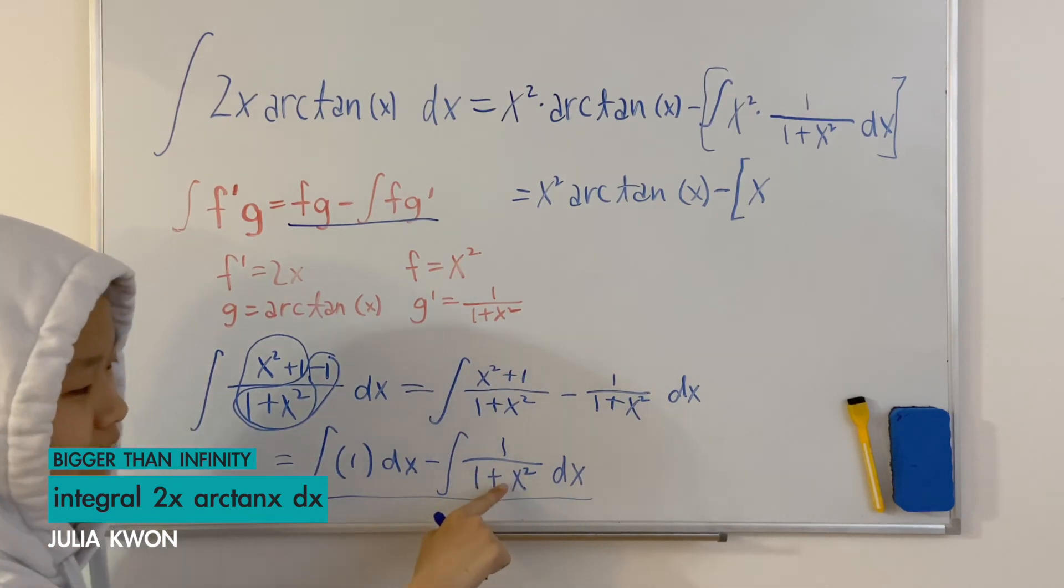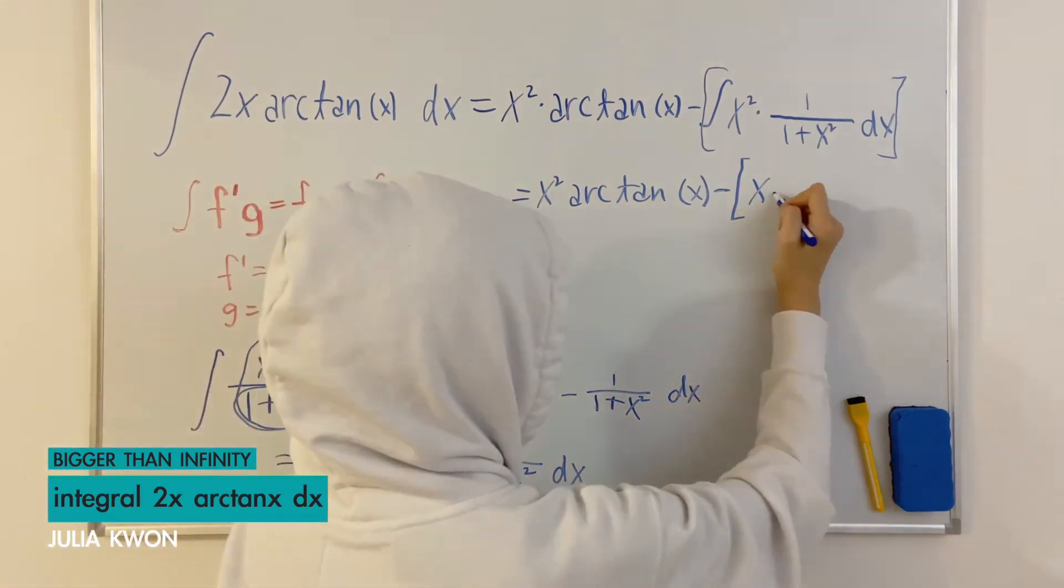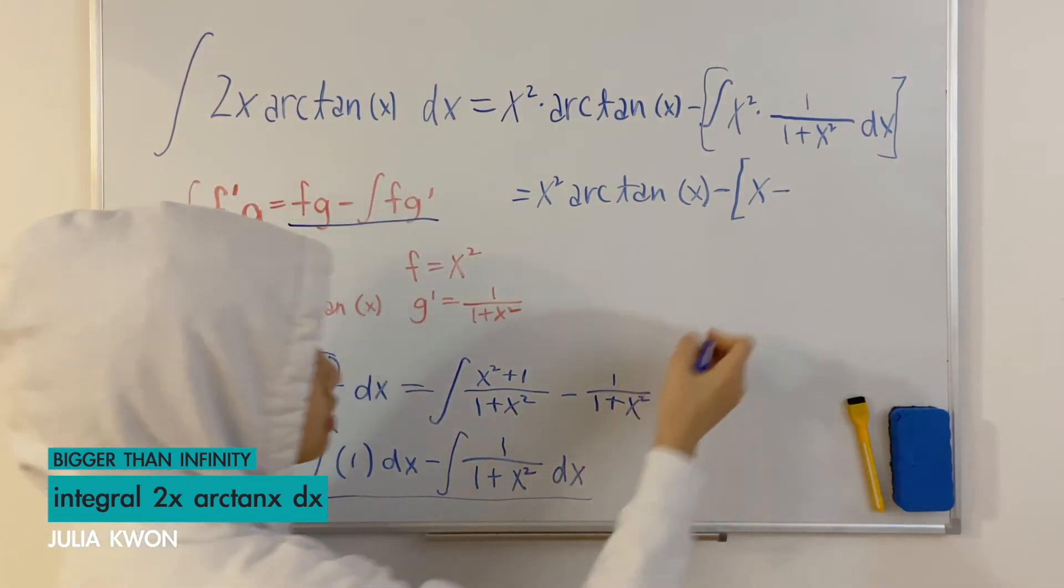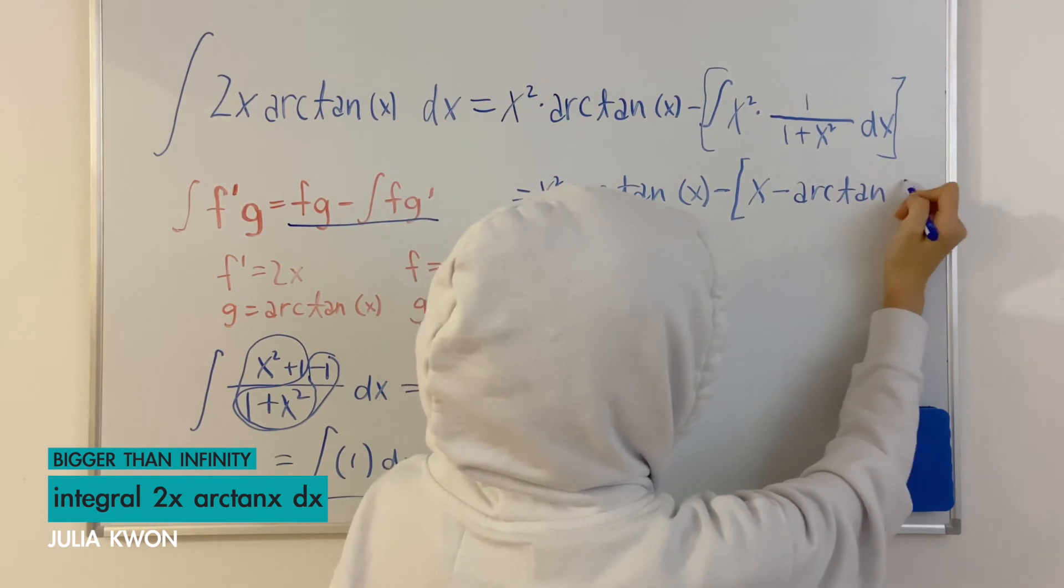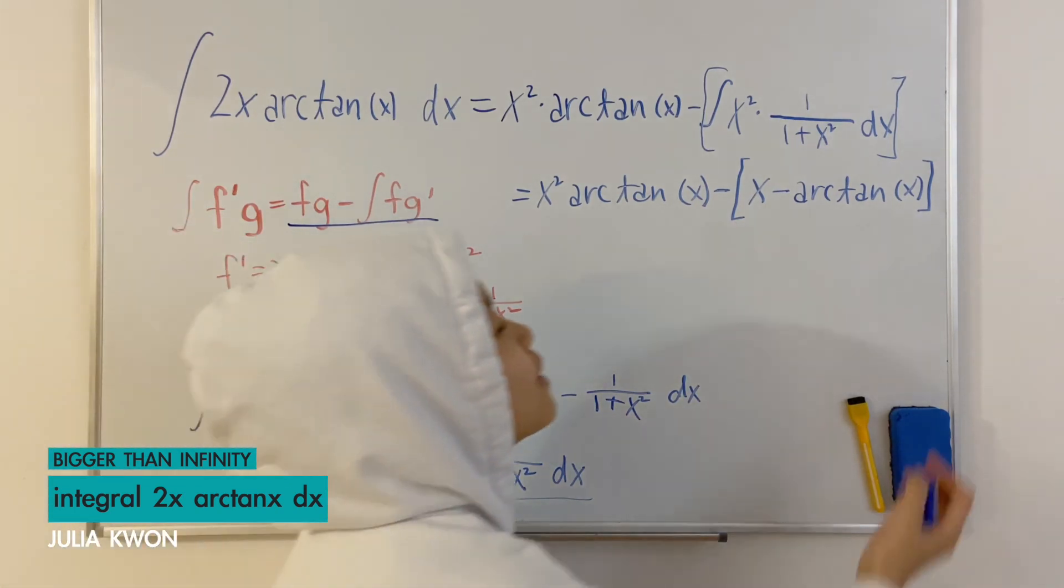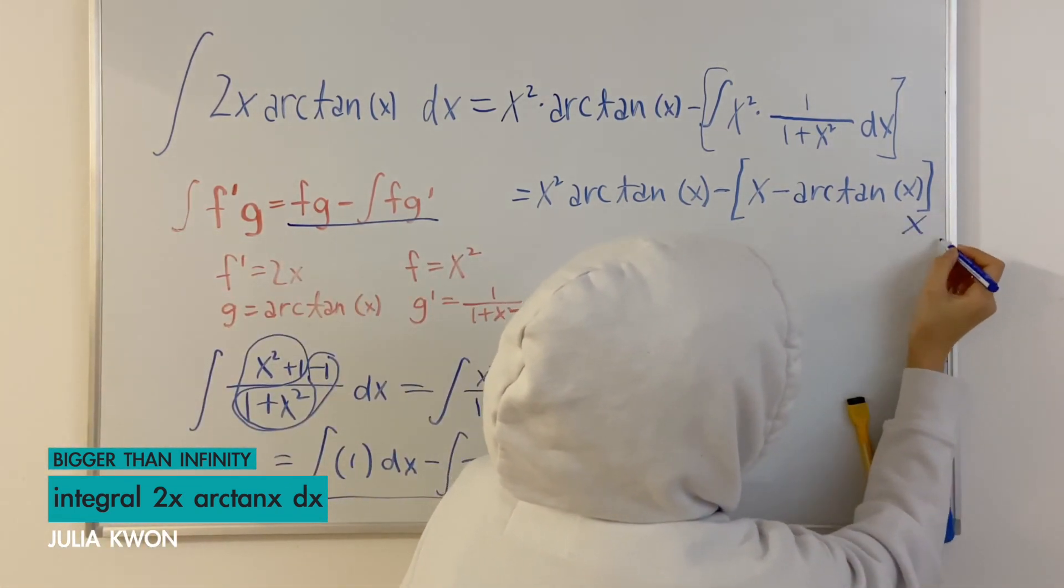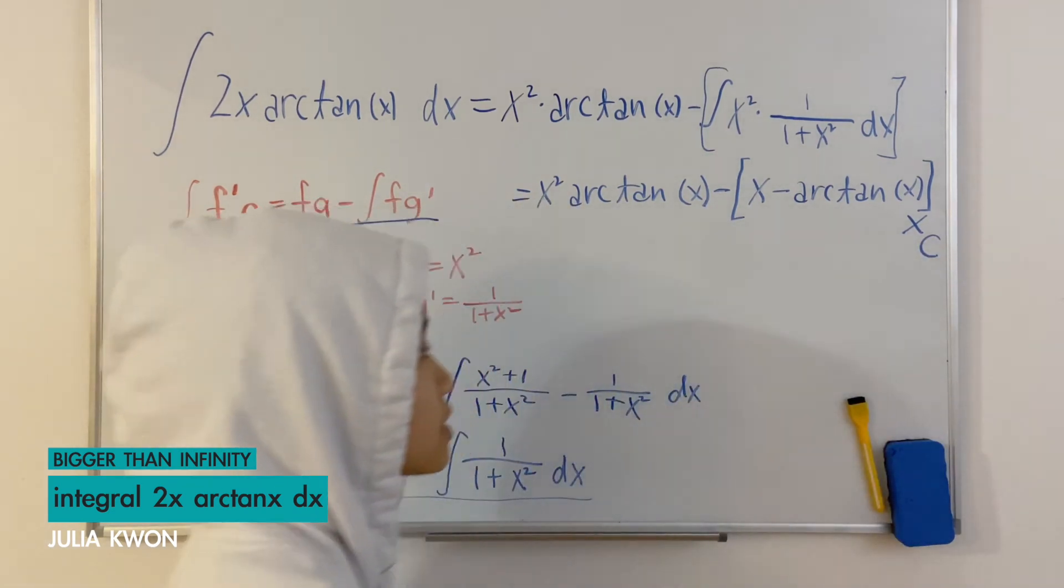1 over 1 plus x squared dx which is equal to arctangent x and also you cannot forget about the constant but I do not have space so I'll just write it like this plus constant.